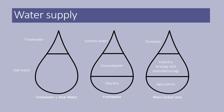When looking at your case studies, it's really important to think about what the main uses are across those three categories — domestic, industry, and agriculture — and how they are used within your country. Where do we get fresh water from? There are three main areas: surface water, groundwater, and through artificial means such as desalination.